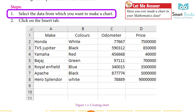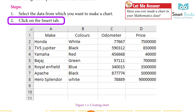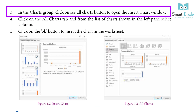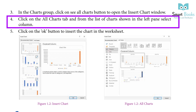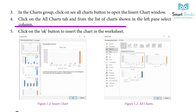Step 1: Select the data from which you want to make a chart. Step 2: Click on the Insert tab. Step 3: In the Charts group, click on the See All Charts button to open the Insert Chart window. Step 4: Click on the All Charts tab and from the list of charts shown in the left pane, select Column. Step 5: Click on the OK button to insert the chart in the worksheet.